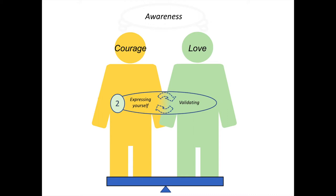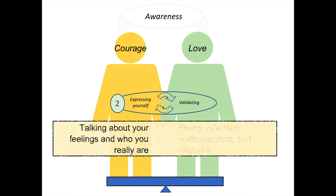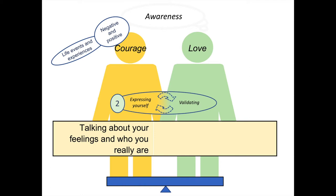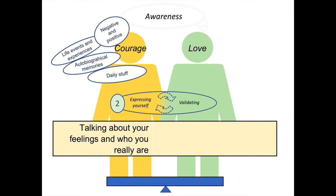The second moment of connection is between expressing yourself and validating. The definition of expressing yourself is talking about your feelings and who you really are. This can be almost anything — talking about your life events and experiences, both positive and negative. In some ways this is really the bedrock of relationships: what we do every day with our partners, friends, family members, even coworkers — just talking about what happened in our days. Talking about more difficult things in our past, our histories, autobiographical memories are just essential to expressing yourself and developing intimacy. As well as just the daily stuff — hassles, things you're feeling and thinking in the moment — just letting somebody see who you are by sharing and talking about this stuff.